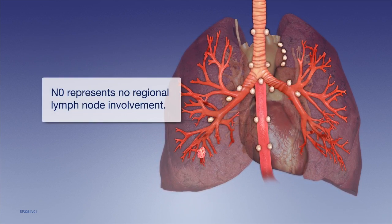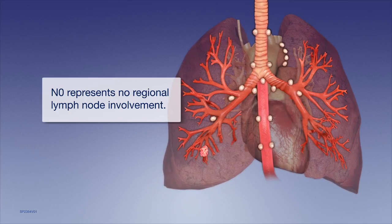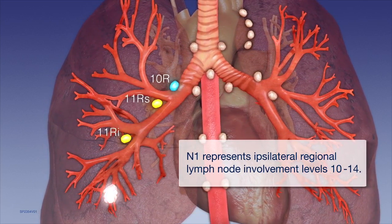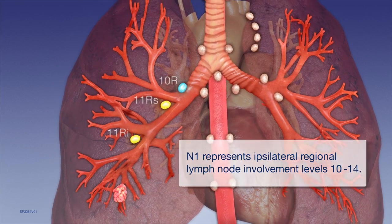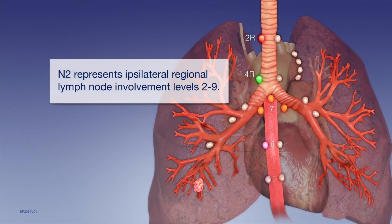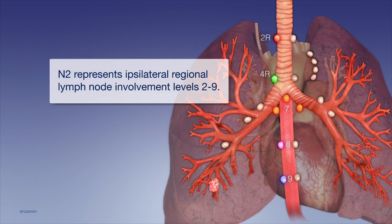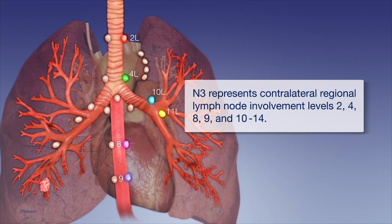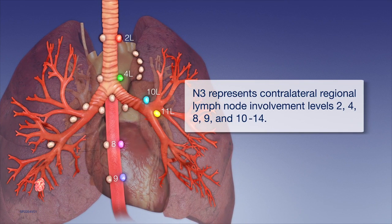N0 represents no lymph node involvement. N1 represents ipsilateral regional lymph node involvement with levels 10 to 14. N2 represents ipsilateral regional lymph node involvement with levels 2 through 9. N3 represents contralateral regional lymph node involvement with levels 2, 4, 8, 9, and 10 to 14.